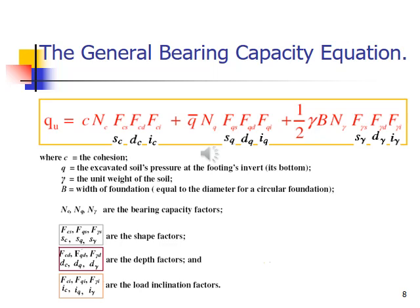Nc, Nq, and Ngamma are the bearing capacity factors. C is the cohesion, Q is the excavated soil pressure at footing invert, gamma into D. Gamma is the unit weight of soil, and B is the width of the foundation, equal or diameter for circular foundation.